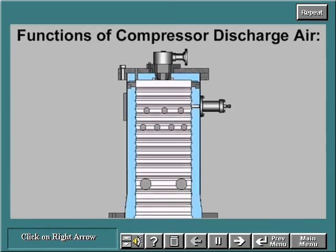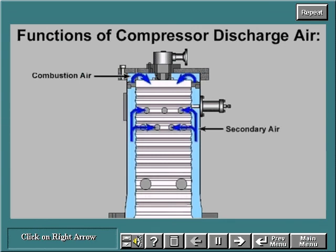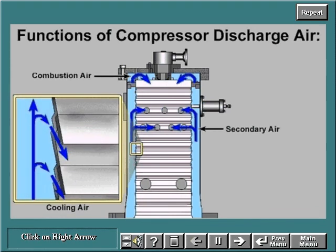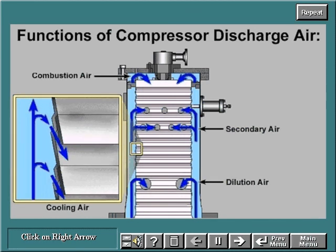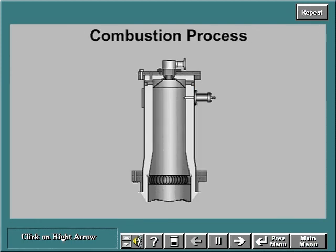The compressor discharge air has four basic functions. It is used as combustion air — primary air — to achieve the proper fuel-air ratio. It is used as secondary air to cool and stabilize the flame. It is used as cooling air to provide a continuous cooling film along the external and internal surfaces of the liner. And it is used as dilution air downstream of the primary combustion area to reduce the gas temperature and preserve the life of the hot gas path components.